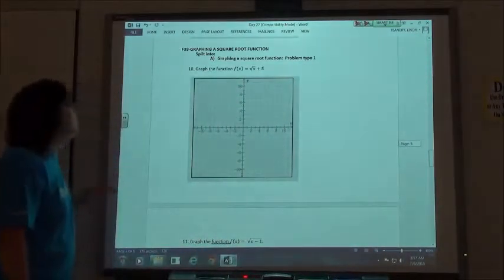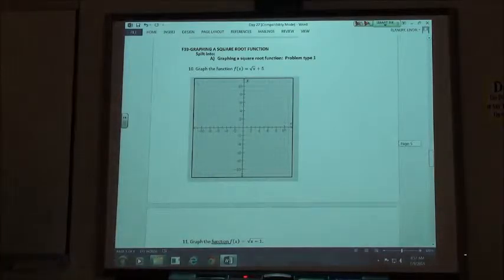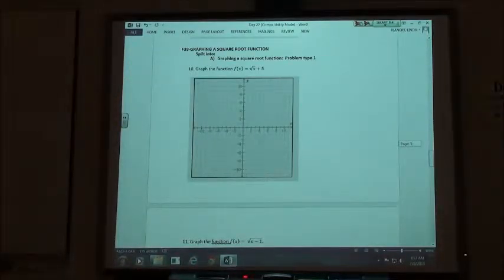They're having you graph a square root function. And on your square root function, because the square root of a negative is undefined, what they're going to have you do is start by finding what you should use in your table for your x values by setting whatever's under the square root equal to the first four perfect squares.